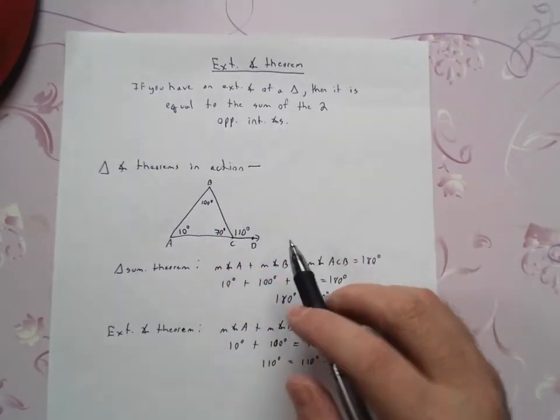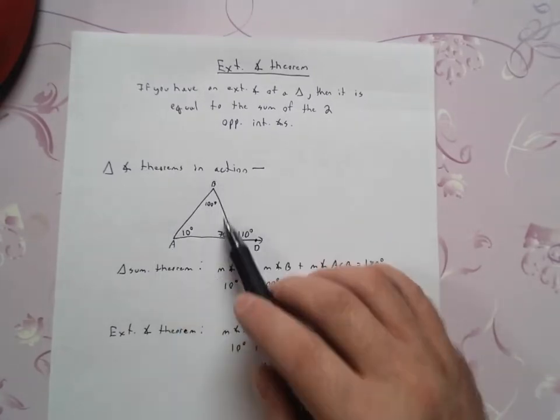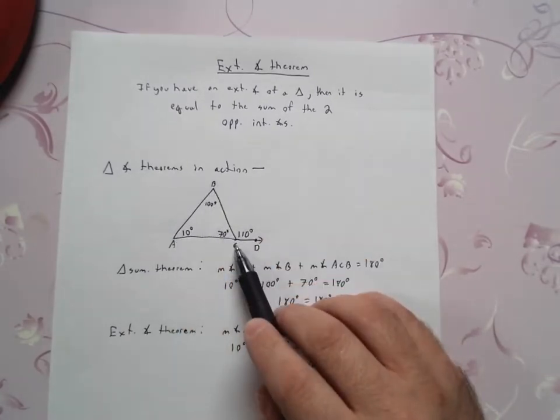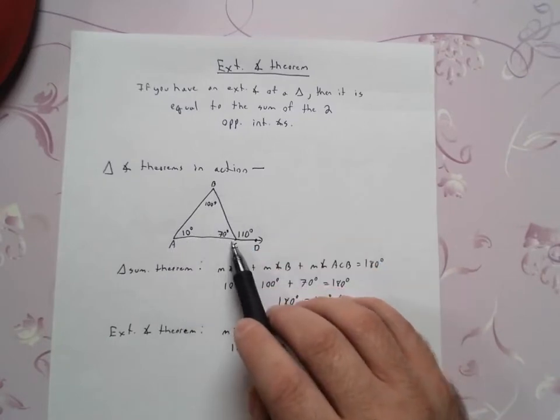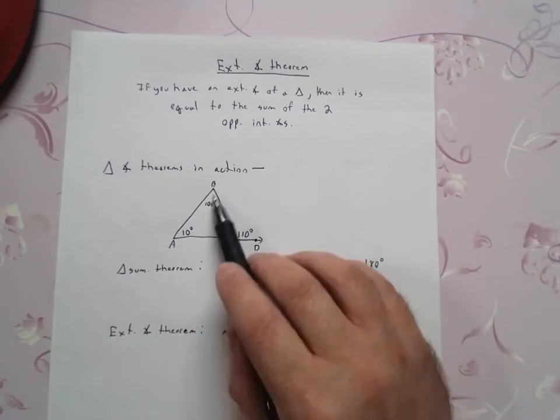In other words, here's my triangle right here. I've got triangle A, B, C, and then I've got these interior angles: angle A, angle B, and angle ACB. I've got these three.